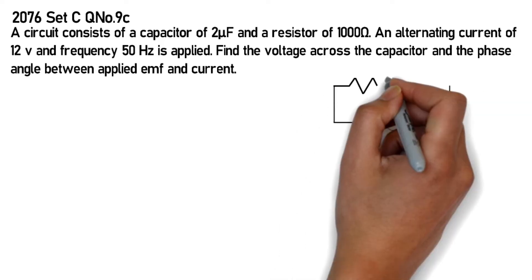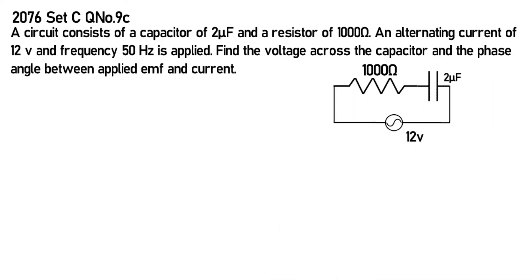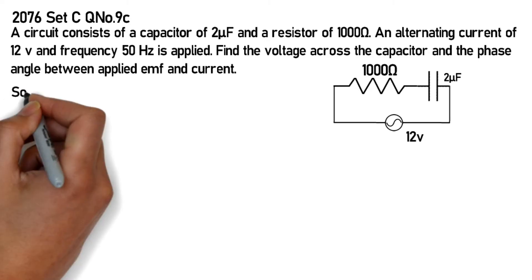The circuit has a 12 volt AC source, 1000 ohm resistor, and 2 microfarad capacitor with current flowing. We need to find the phase angle between current and voltage and the potential difference across the capacitor.